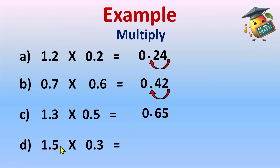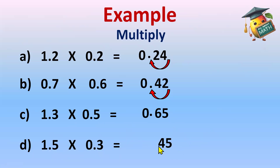Part D: 1.5 multiply 0.3. Remove the decimal and do the multiplication. 15 threes are 45. Count the decimal places: 1 and 2. So total number of decimal places are 2. Decimal will come after two digits in the answer, and before that, 0. So the answer is 0.45.